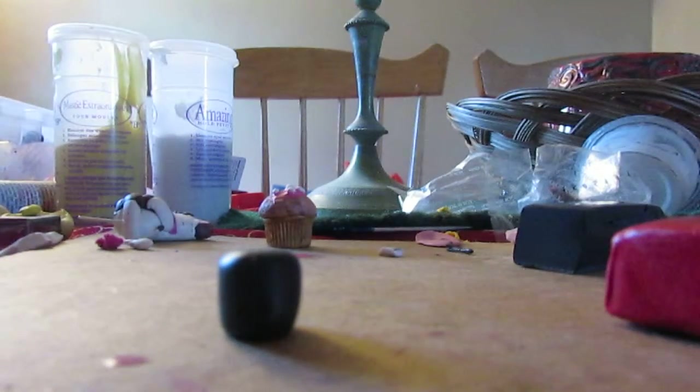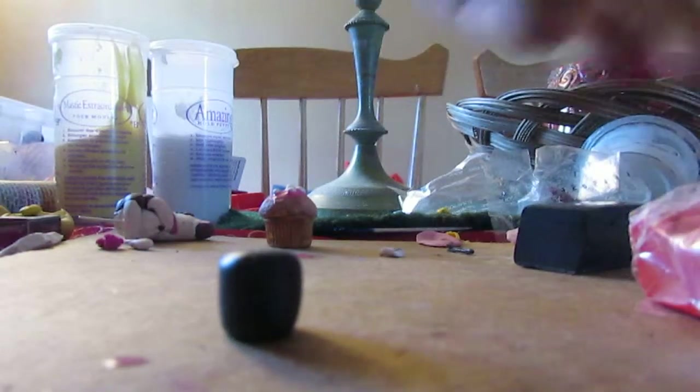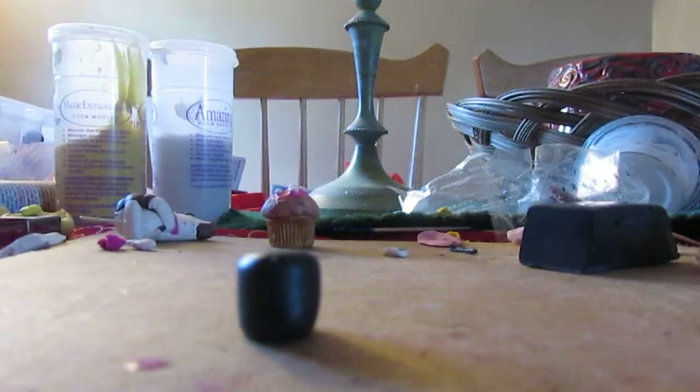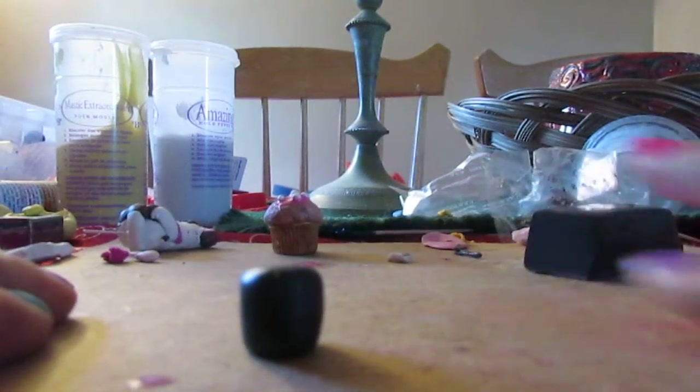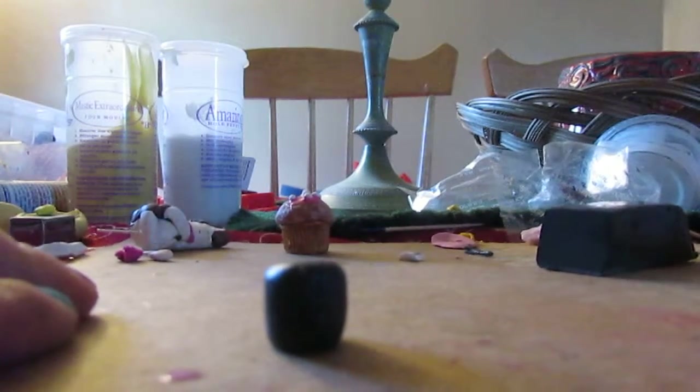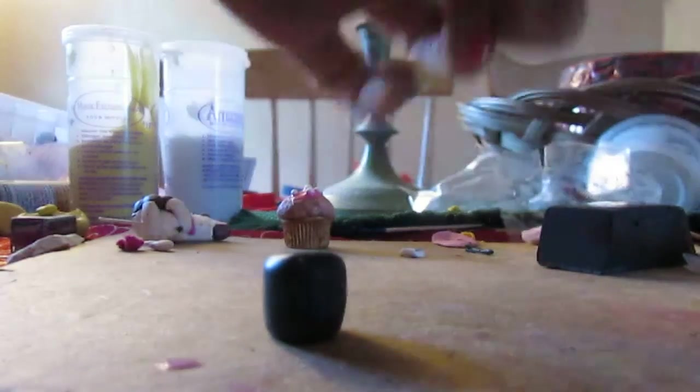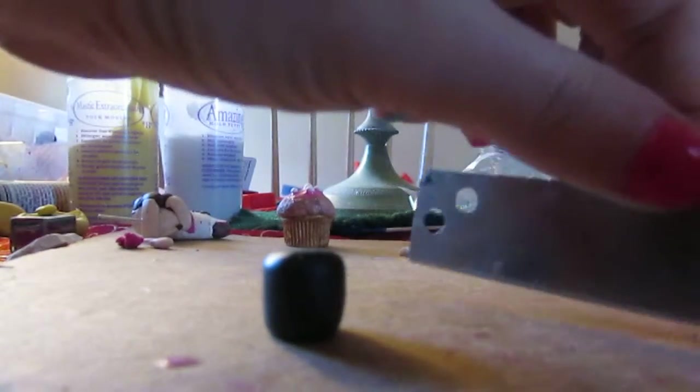So you're going to take some red polymer clay. I'm just going to use this one. And I'm just going to take the sharp end of the blade and chop off a little piece of red. So now I'm just going to roll it into a thin snake like this. And I'm just going to cut off tiny little chunks.